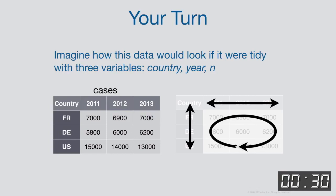Here is the cases data frame, showing how the variables were distributed. I'd like you to imagine — just for 30 seconds — how this data frame would look if you restructured it to be similar to storms. If it were tidy and had the variables country, year, and n. If you tried to scribble this out on paper, it would make it much easier to follow what gather does.